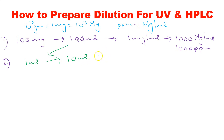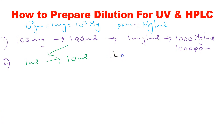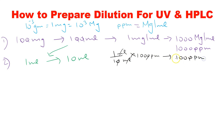Now the concentration of Stock 2: 1 mL dissolved in 10 mL — the mL units cancel. The original concentration was 1000 ppm. So: 1 divided by 10, multiplied by 1000 ppm = 100 ppm. This is Stock Solution 2 at 100 ppm.